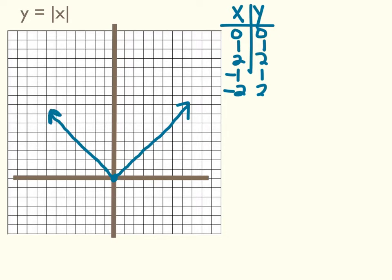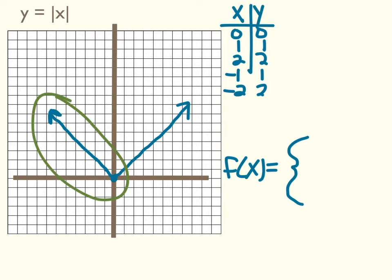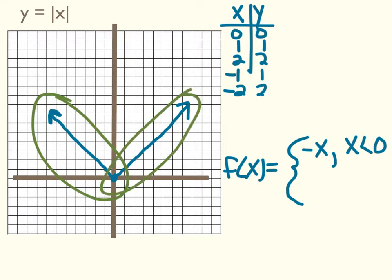We can write this as a piecewise function. We'll say f of x equals, and put a big bracket because we're going to write two pieces of this function. The left piece is the line y equals negative x, and that's for the interval of all x's from negative infinity up to 0. Most often you'll see it as an inequality, so we'll say x is less than 0. Then for the right-hand side, that line is y equals x, and that is for x greater than or equal to 0.